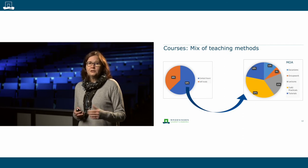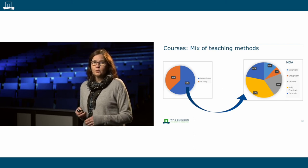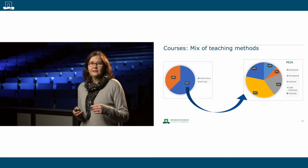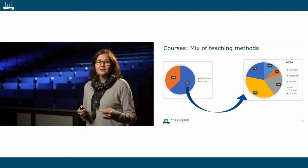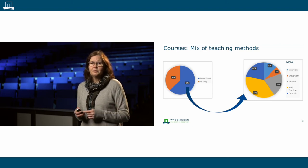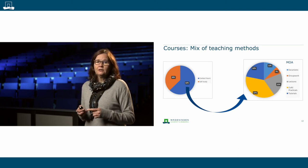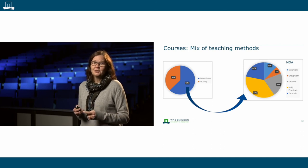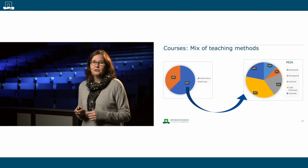The courses at Wageningen University, including in the Master of Organic Agriculture, offer a mix of teaching methods. In a typical course, you will spend about one-third of your time on self-study and two-thirds on teaching methods offered by lecturers from the university. This involves lectures, tutorials, practicals — either in the lab or behind a computer for modeling exercises. You will also work on group assignments to learn how to interact and cooperate, which is a necessary skill for when you start working.